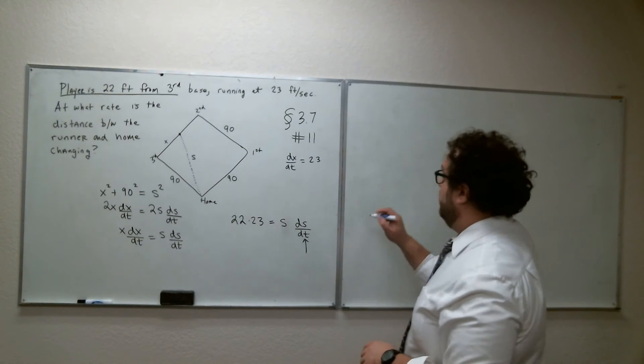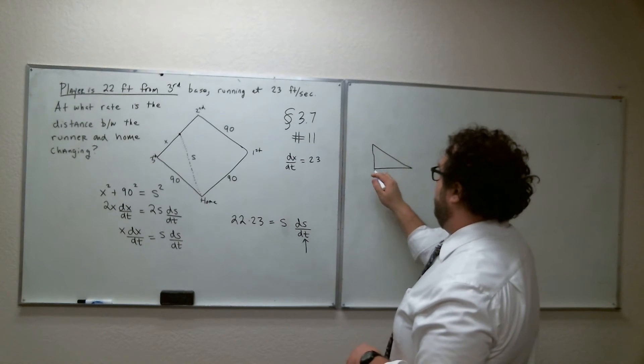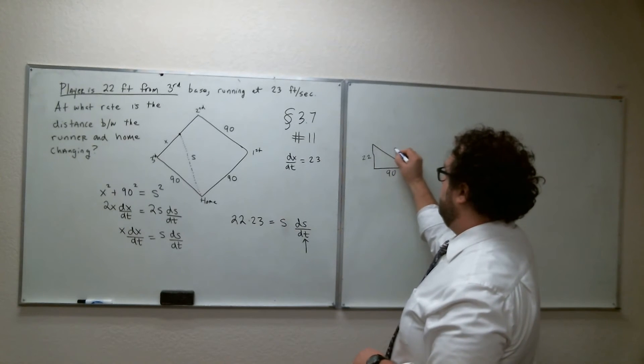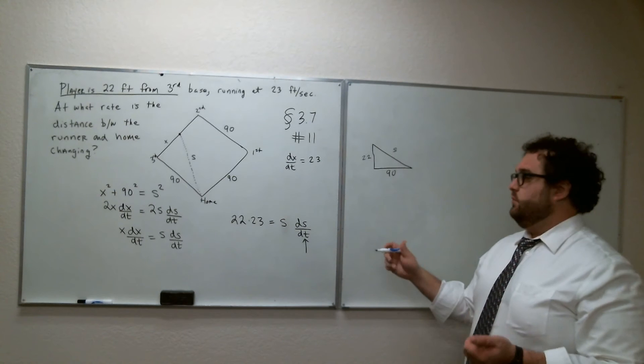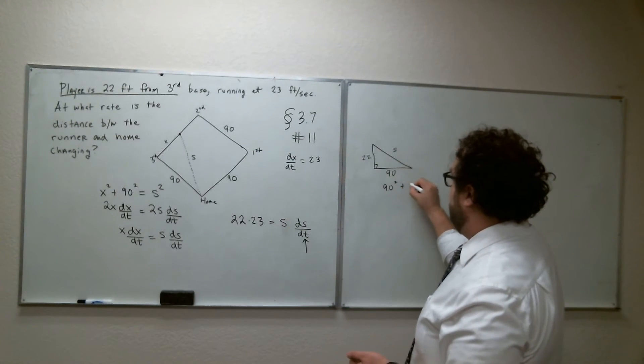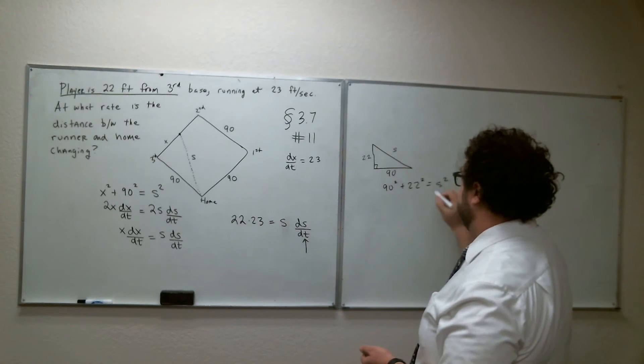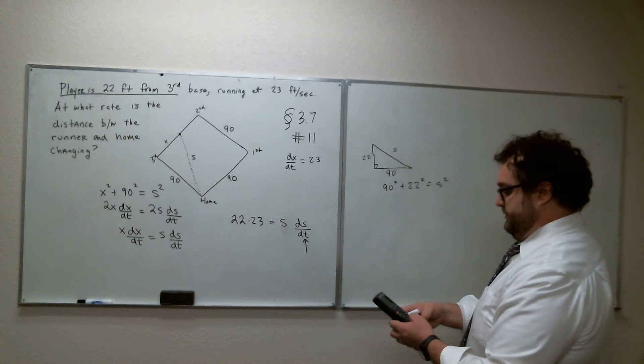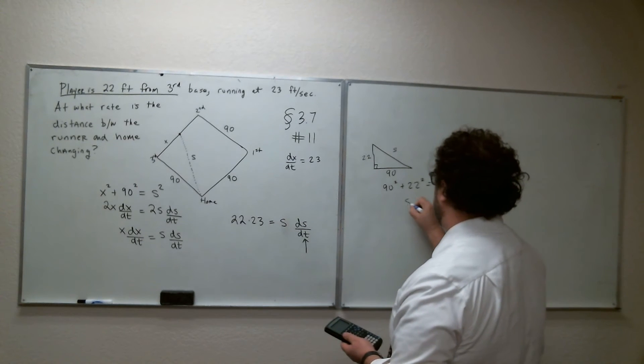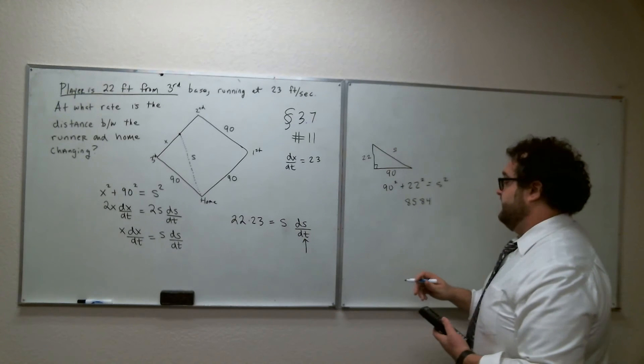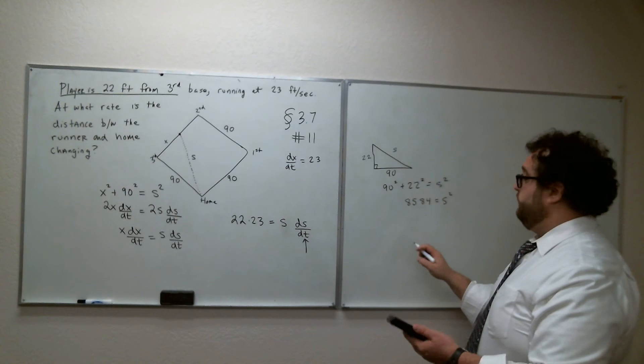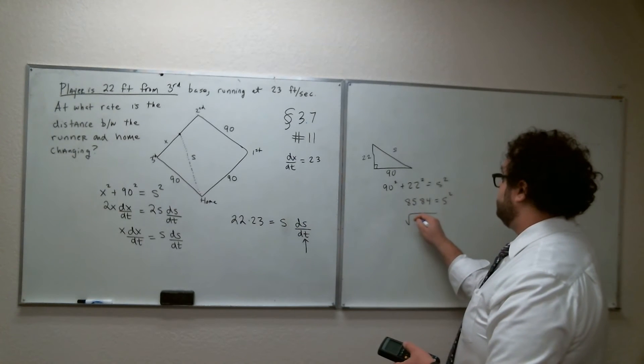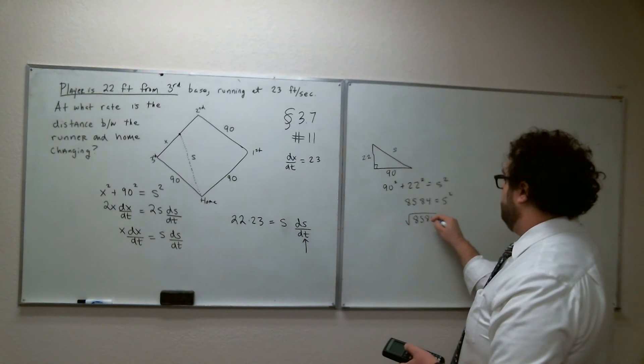So let's see. Just over here real fast. We want to consider this equation where X, well, this side is 90, where X is 22, and S is unknown. So clearly, the Pythagorean theorem tells us that 90 squared plus 22 squared equals S squared. Okay? I have a feeling this is not going to give us a nice answer, but that's all right. 90 squared plus 22 squared, that's 8584. So if I take the square root of 8584, do I get a nice number? No, I don't get a whole number. So I'm just going to leave this as the square root of 8584 equals S.